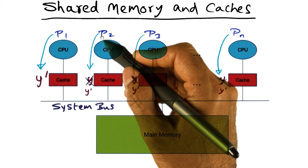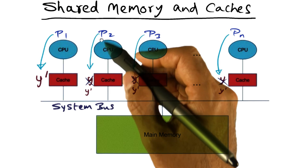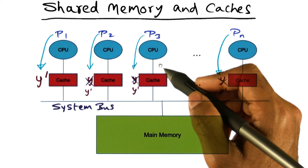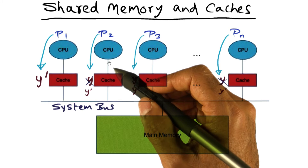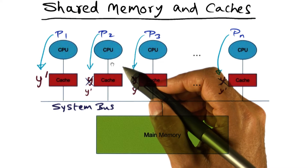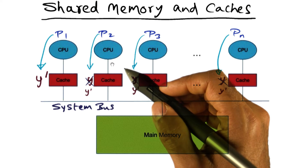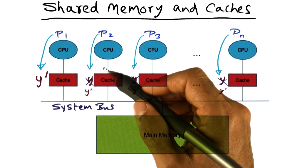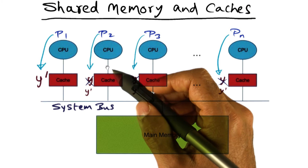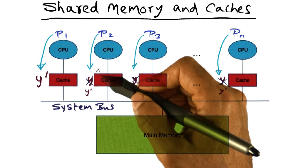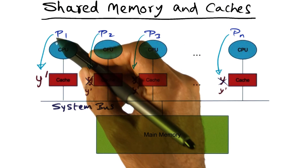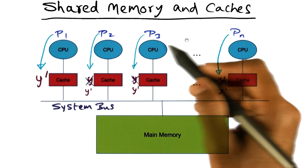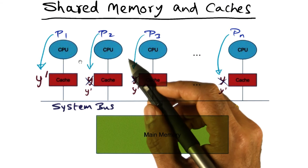Now who should ensure this consistency? There is a partnership between hardware and software. The hardware and software have to agree on what is called the memory consistency model — a contract between hardware and software defining what behavior a programmer can expect when writing a multi-threaded application running on a multiprocessor.